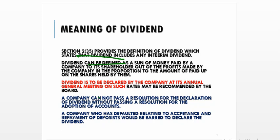A company cannot pass a resolution for the declaration of dividend without passing a resolution for the adoption of accounts — first they have to adopt the accounts, then they can declare the dividend. A company which has defaulted relating to acceptance and repayment of deposits would be barred from declaring the dividend; that company could not declare the dividend.